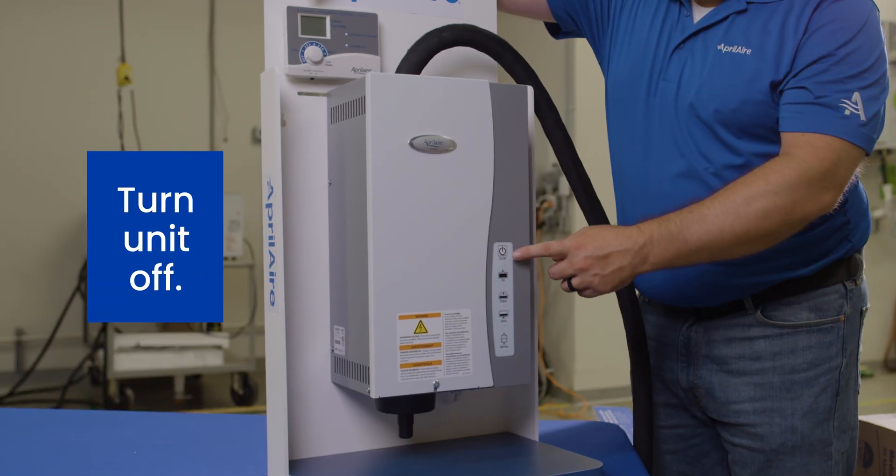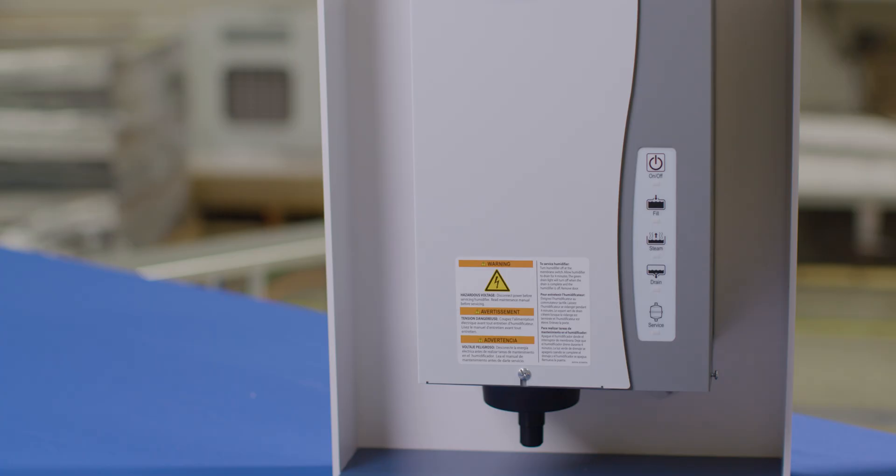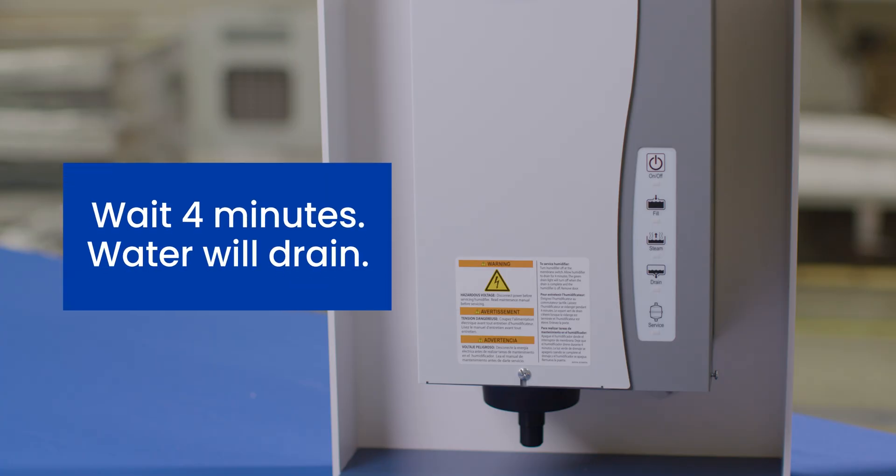The first thing you're going to want to do is turn the unit off, which will force the unit to drain. When you push the off button, you'll hear the solenoid valve open, putting cold water down the drain. Then the drain valve will open and let the water run out of the canister. Wait four minutes to make sure all the water is out of the unit.